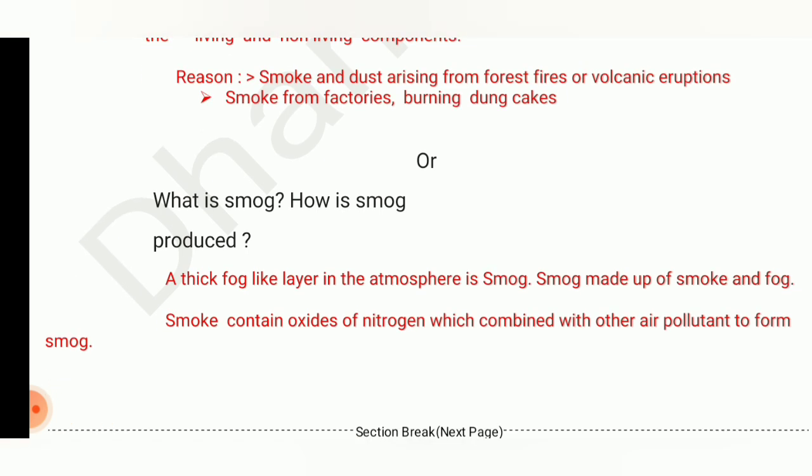For the option question: what is smog? Smog is a fog-like layer in the atmosphere. How is smog produced? Smog is made up of smoke and fog. Smoke contains oxides of nitrogen which combine with other air pollutants to form smog. Make sure to learn all definitions from this chapter.